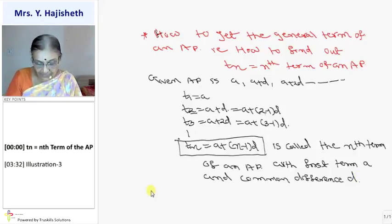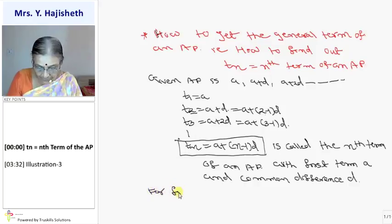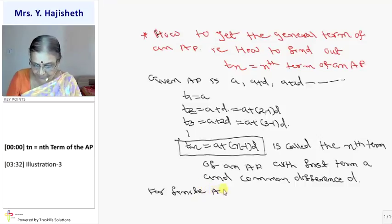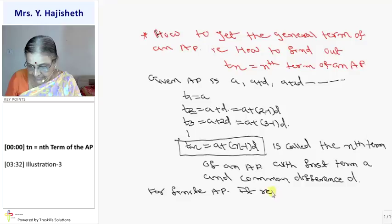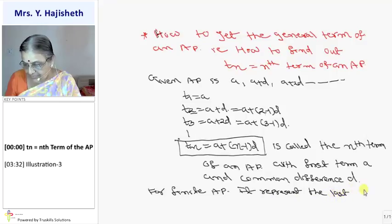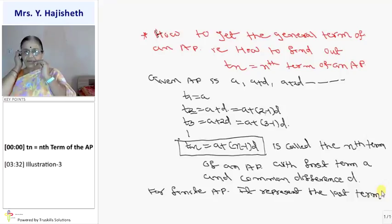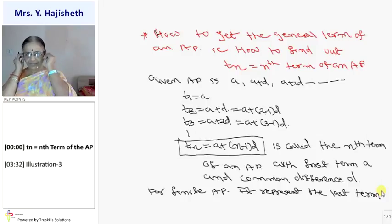And this is for finite, agar sequence finite AP hai. Then it represents, this Tn represents the last term sometimes. Last term ke liye bhi hum, we can take the formula of Tn. Suppose the last term is given, you equate it with Tn, you can find out the value of N. Aaram se, clear?